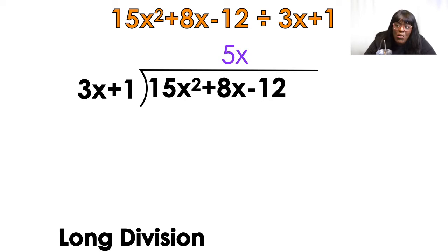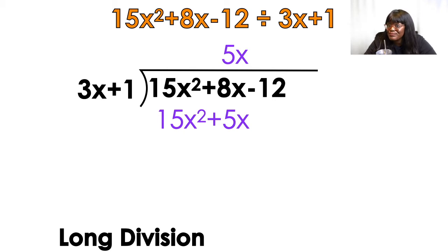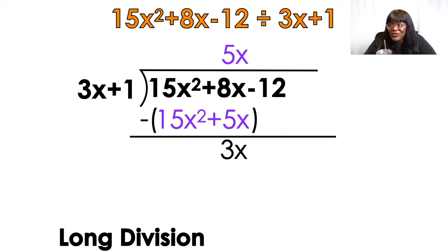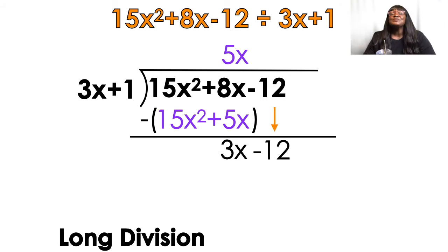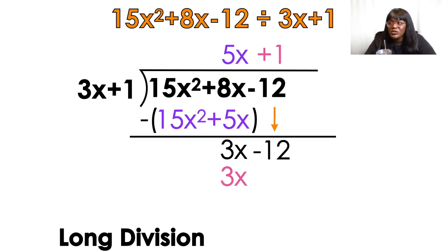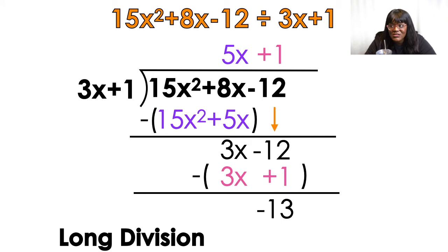What am I going to do with that 5x? Multiply it by what's on the outside. 5x times 3x is 15x squared. 5x times 1 is 5x. Subtract: 15x squared minus 15x squared cancels out. 8 minus 5 is 3. Bring down the minus 12. What times 3x equals 3x? 1. 1 times 3x equals 3x, and 1 times 1 equals 1. Subtract: 3x minus 3x cancels, negative 12 minus 1 equals negative 13. That negative 13 is the remainder, and I put it over the divisor.